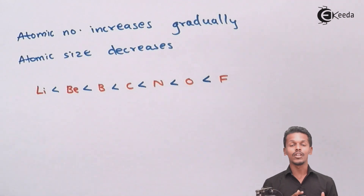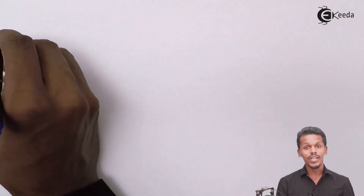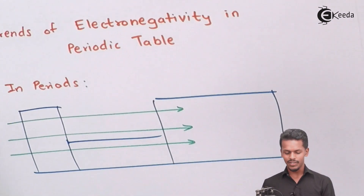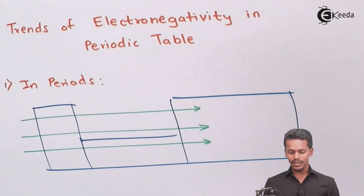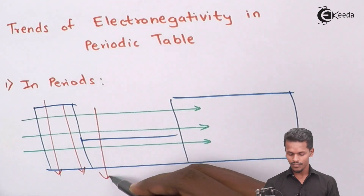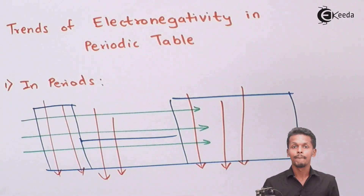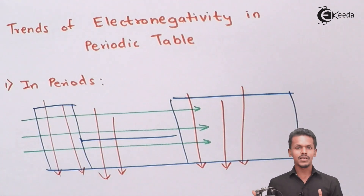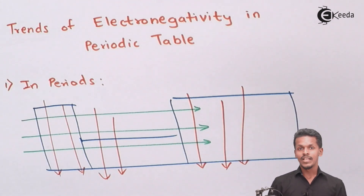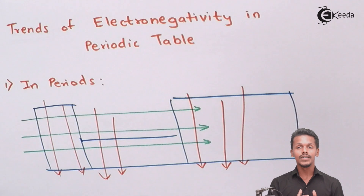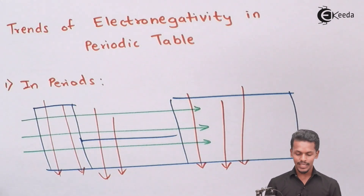Now let us talk about what kind of variation we see in groups. Groups are the vertical columns — when we move from top to bottom. There are a total of eighteen groups in the modern periodic table and seven periods. As we move down a group, the atomic number increases, and that increase is not gradual but rapid — the difference between atomic numbers is larger.